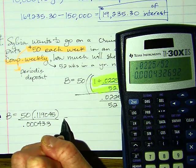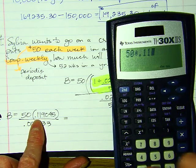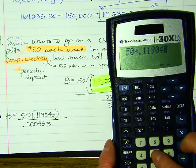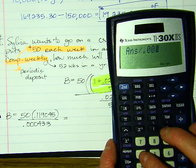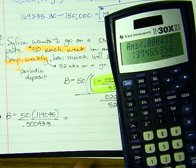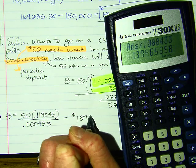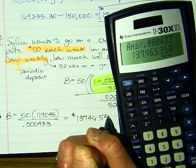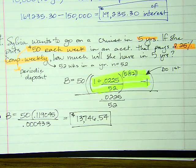Now simplifying the top: 50 × 0.119045, then divided by 0.000433. I get $13,746.54. She will have saved up almost $14,000 just by setting aside $50 a week.